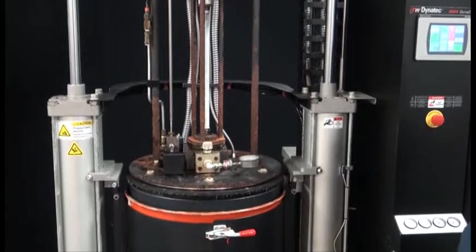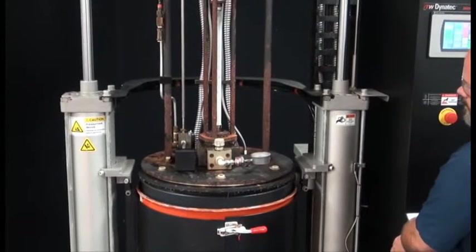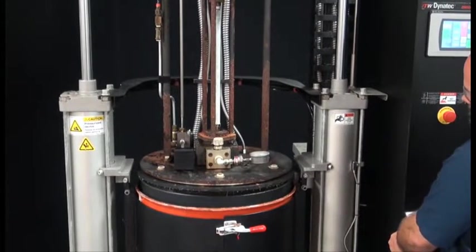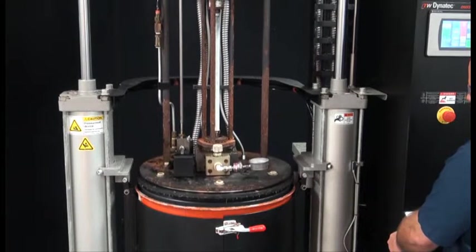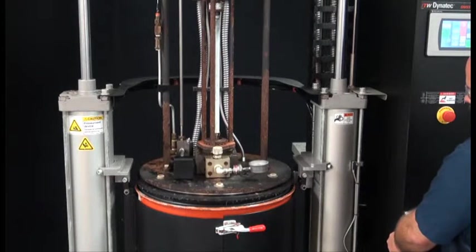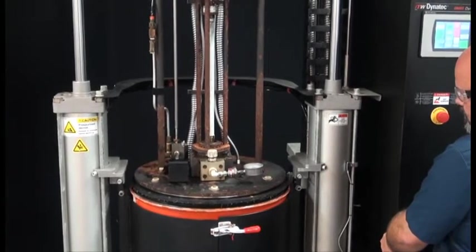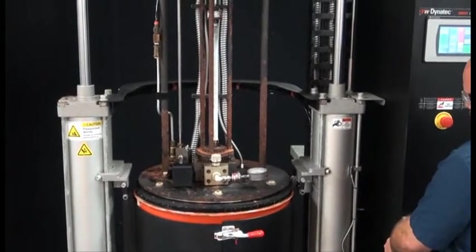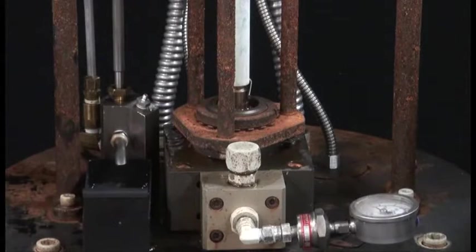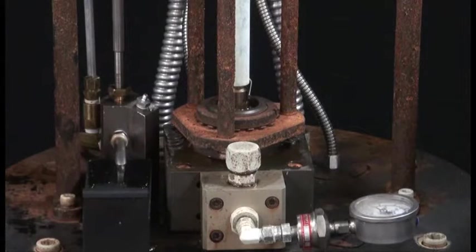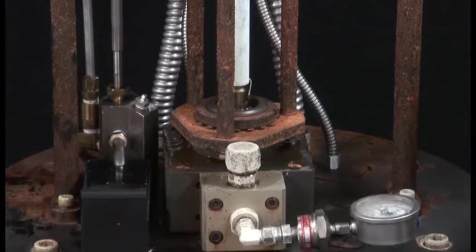Go into the auto ram down mode to lower the platen and purge air as the platen is lowered onto the glue in the drum. Continue this process until a steady stream of glue is being forced from the purge spout with no air bubbles.